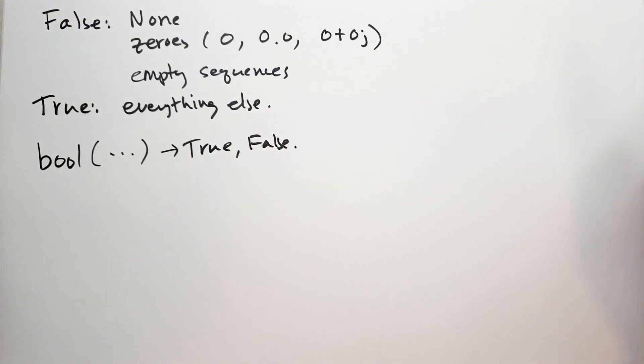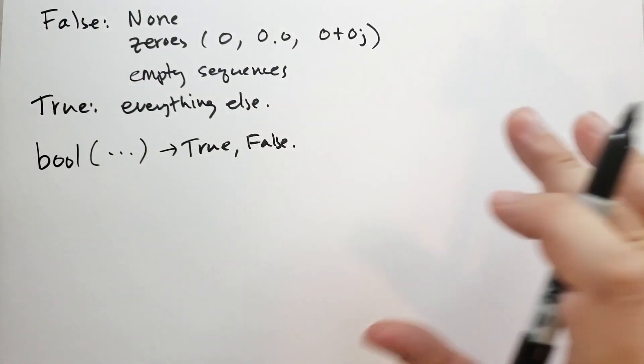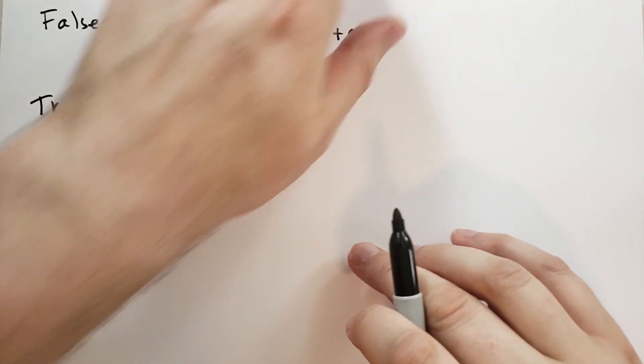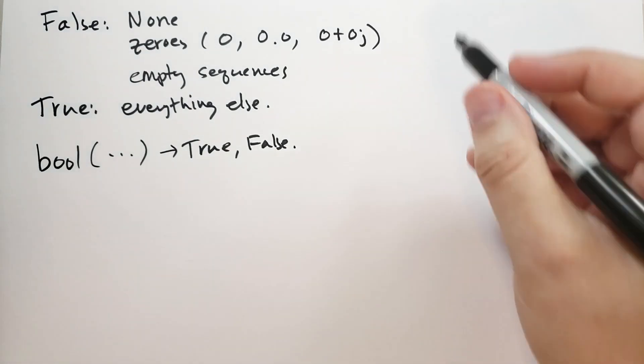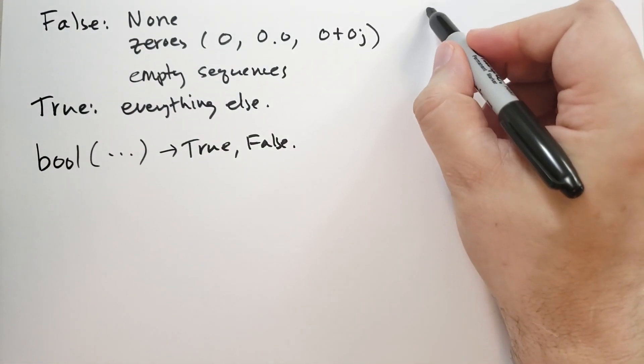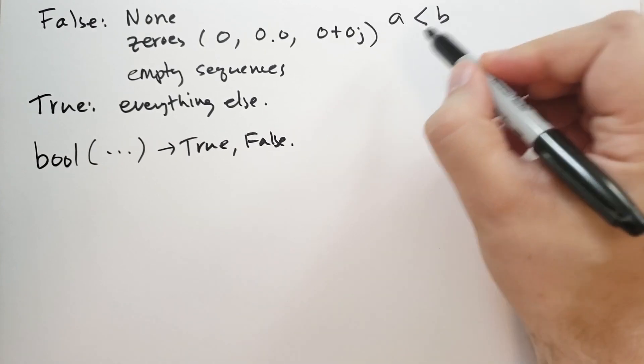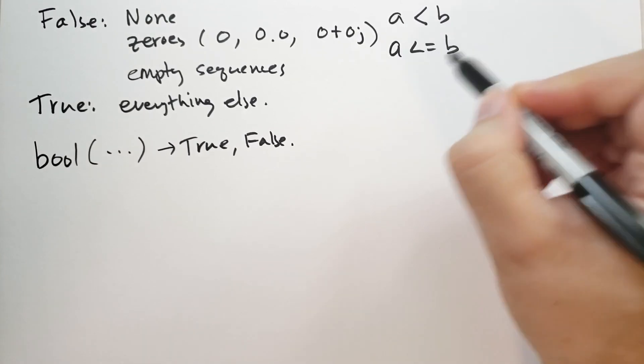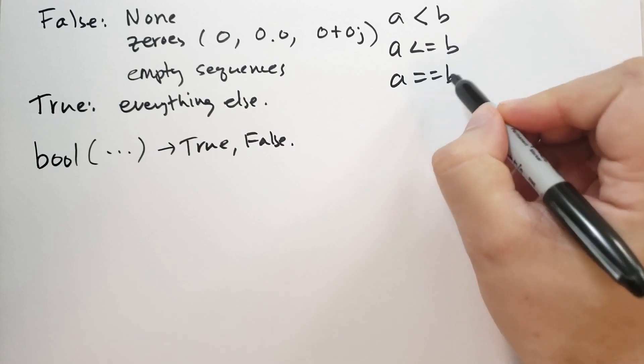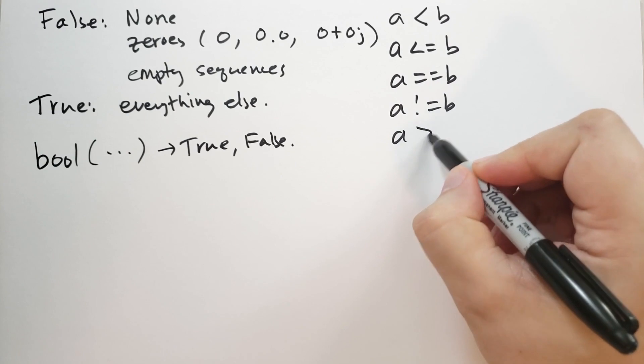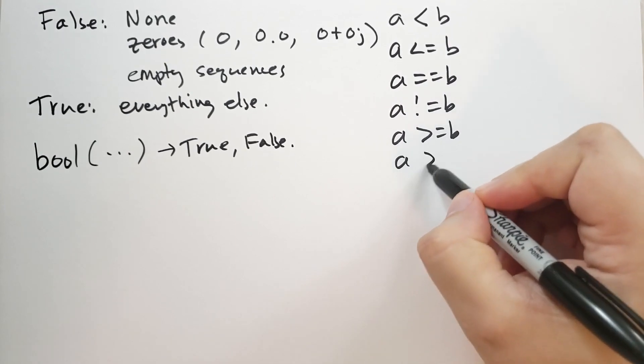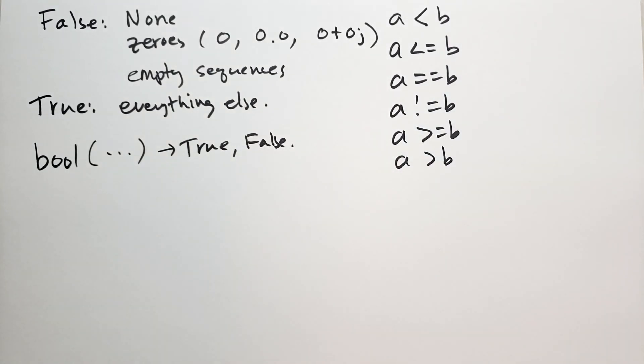We could use zeros to write our if statements, but we have in Python a bunch of comparators. We have less than: A less than B. A is less than or equal to B. A is equal to B—note that there's two equal signs, not one. A is not equal to B. A is greater than or equal to B. And finally, A is greater than B. This works pretty much the way you expect.